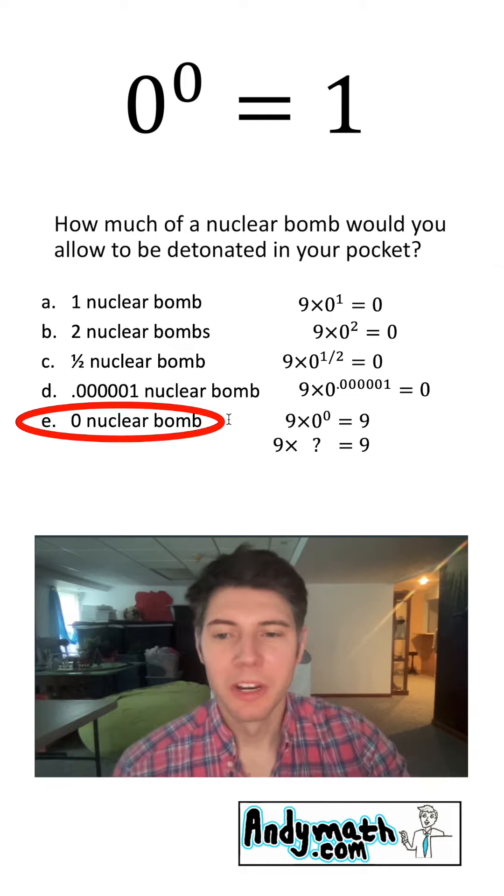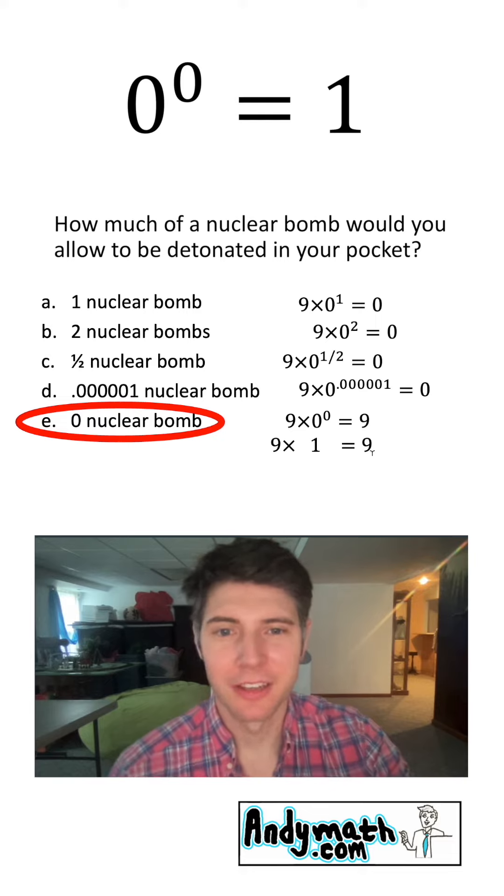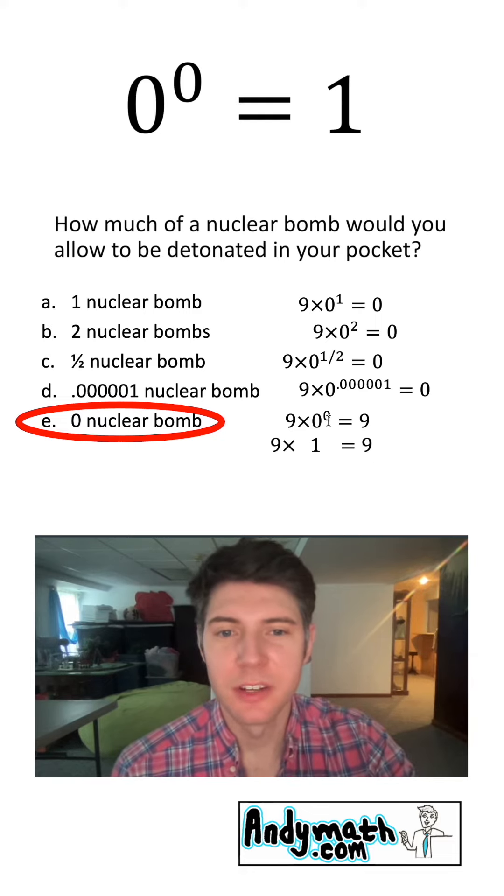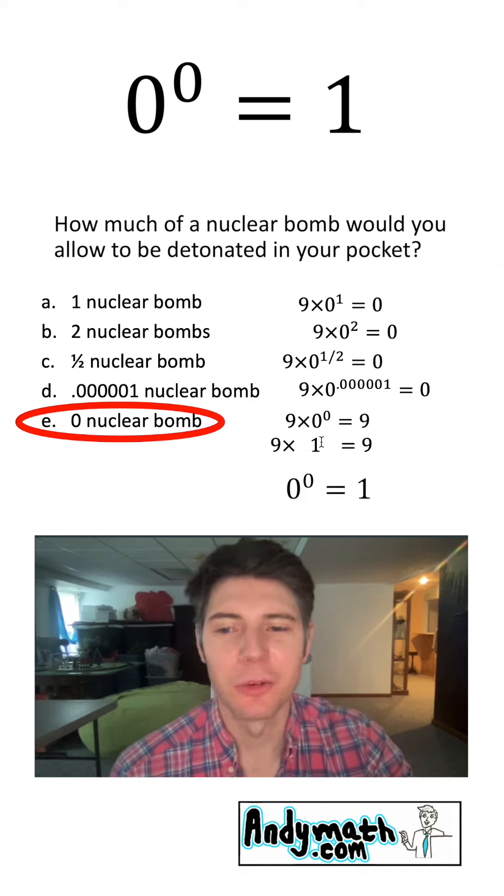So what other number can we multiply by nine to keep it as a nine? One is the multiplicative identity. So do you know the reason why the zero to the zero here behaves like the one right here? That's because zero to the zero equals one.